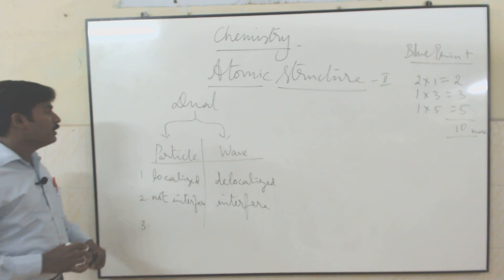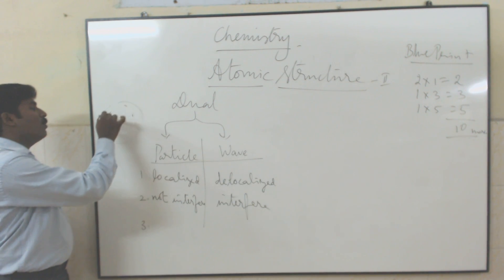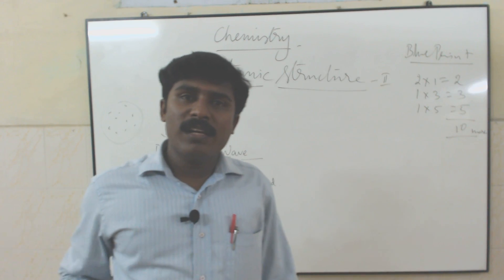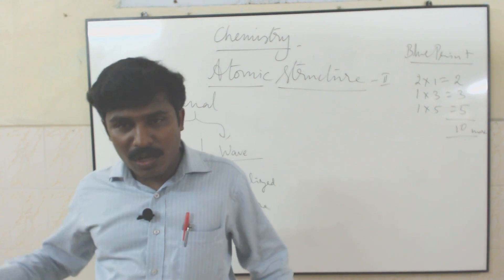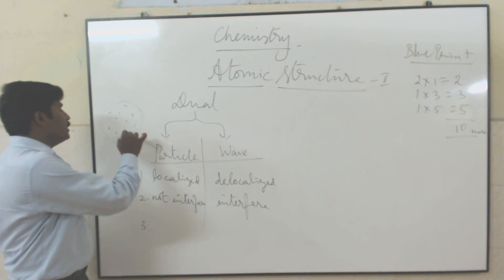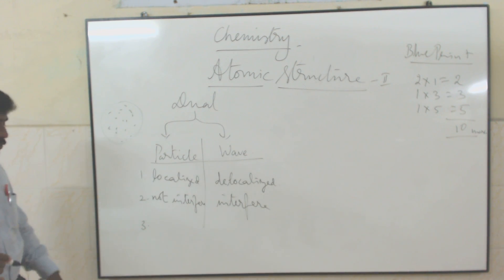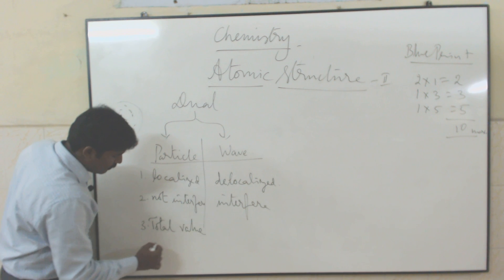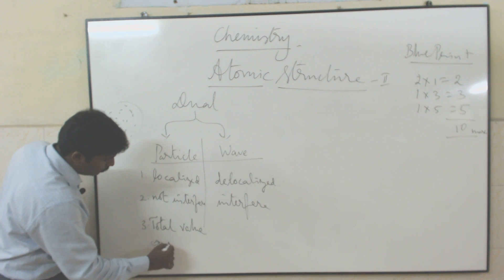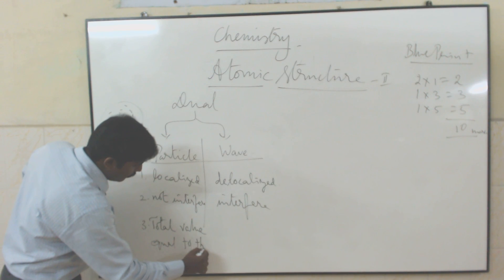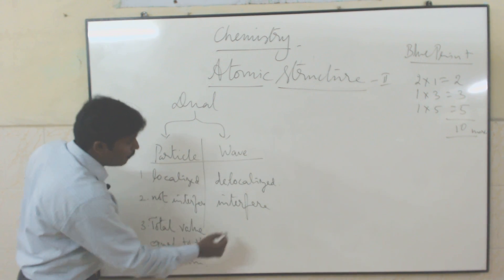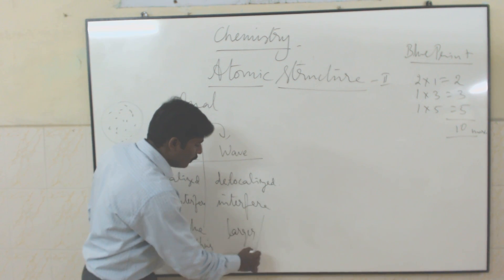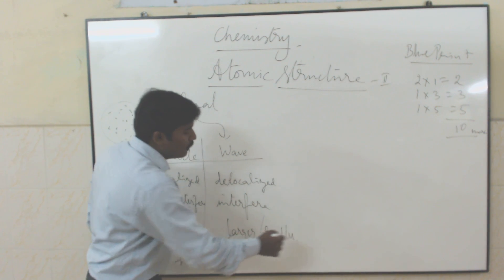Think about how many particles are present in a space — you have to count all the particles. So the total value is equal to the sum. But in the case of waves, the resultant wave may be larger or smaller due to interference.